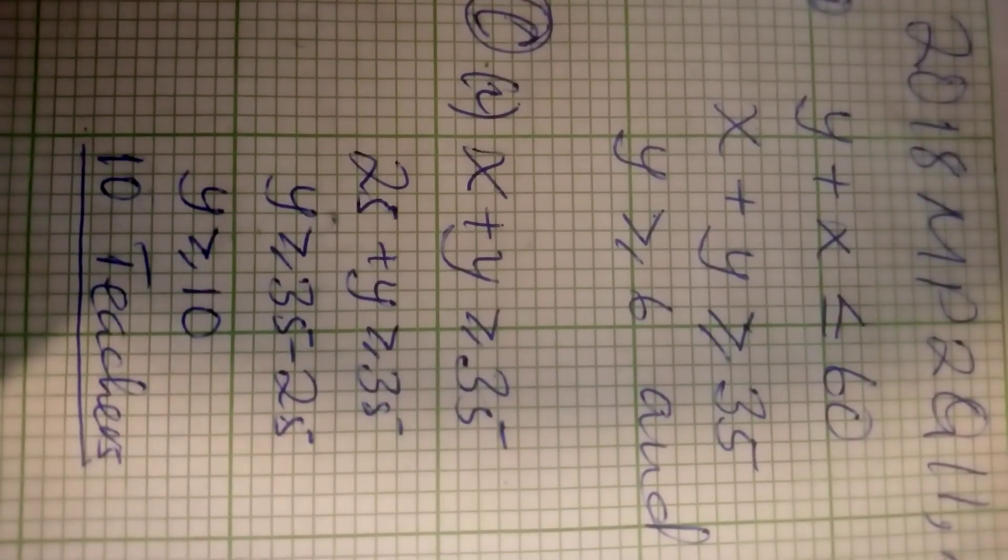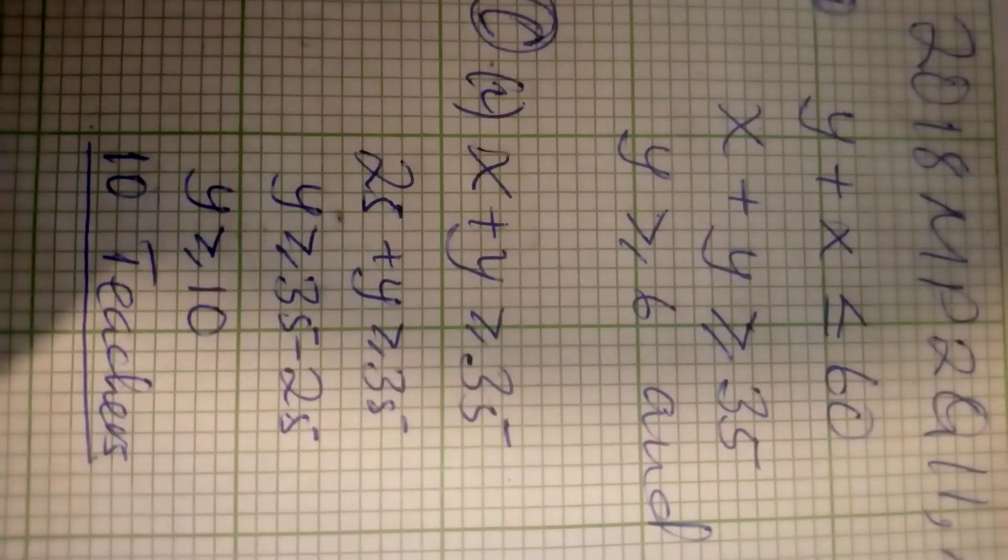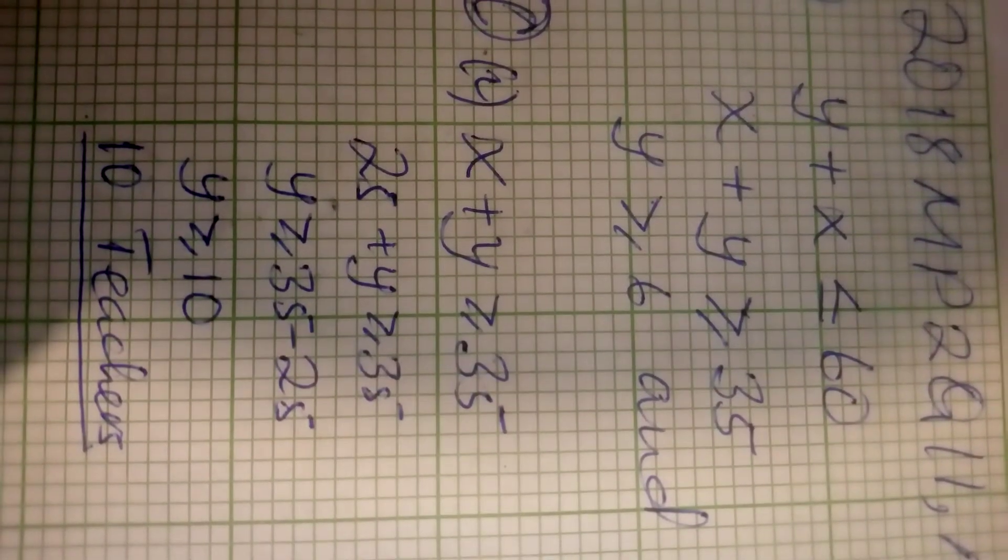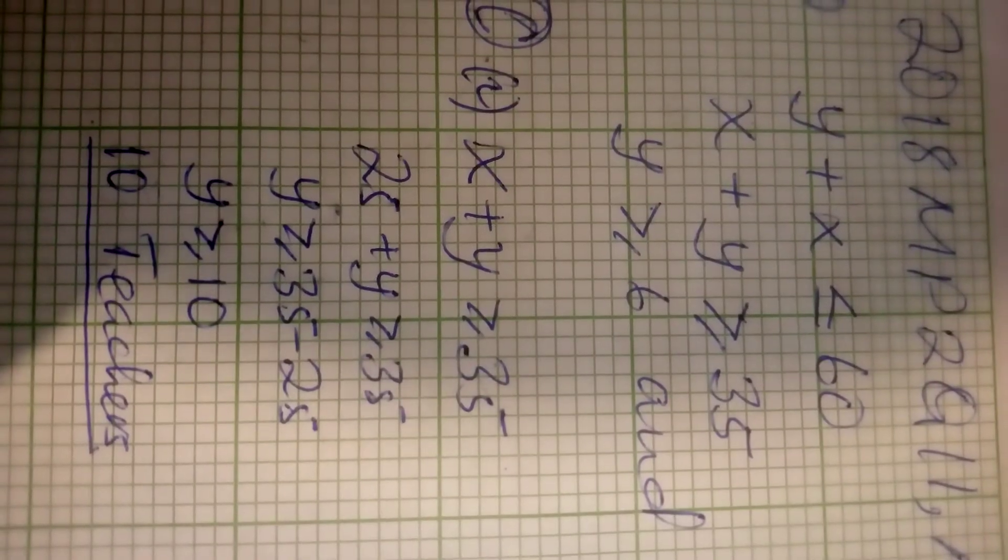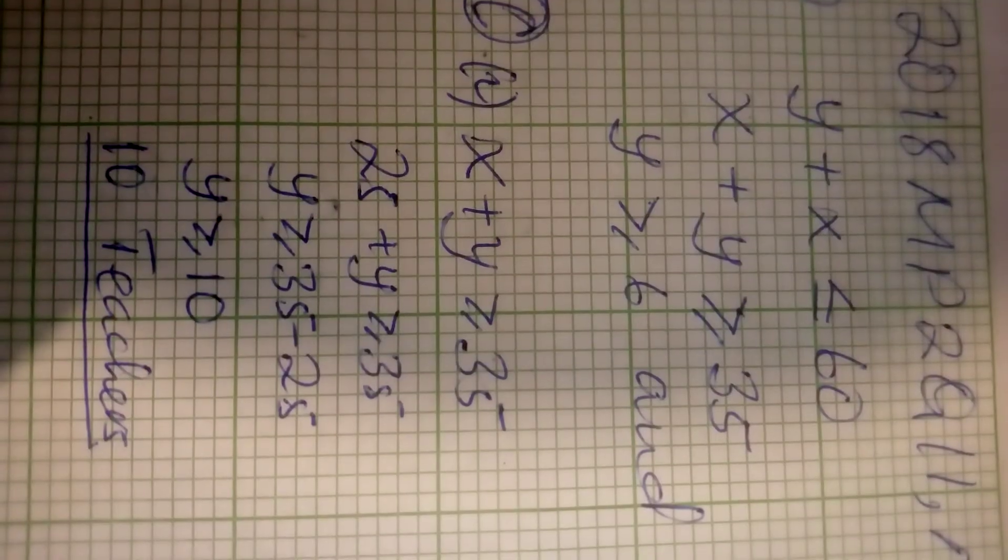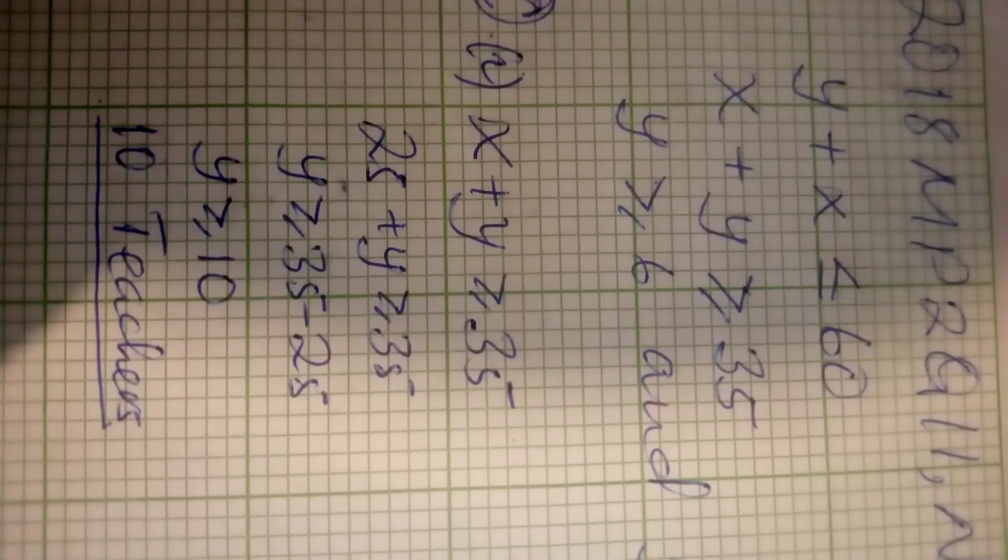Now since we've been asked or told to say there are 25 learners, so since x is representing learners, we have 25 plus y greater than or equal to 35. And when we solve for y, we have 10, and we will say 10 teachers were present on that trip.